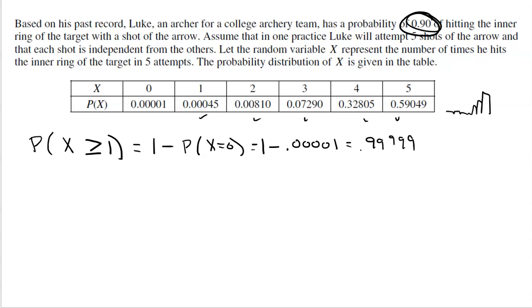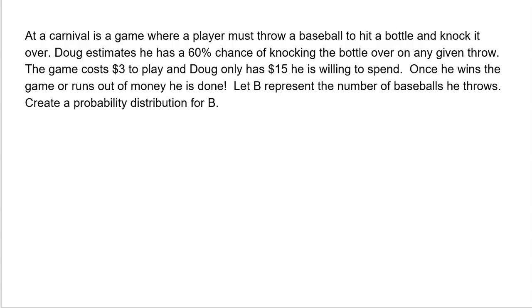But here's the cool thing. Sometimes a probability distribution where you are listing all of the options, all of the outcomes, and all the probabilities is not given to you. You have to build it. And these present kind of fun questions that you're going to have to tackle. Here's a really good one I came up with. At a carnival is a game where a player must throw a baseball to hit a bottle and knock it over. Doug estimates that he has a 60% chance of knocking the bottle over on any given throw. The game costs $3 to play, and Doug only has $15 to spend. Once he wins the game or runs out of money, he is done. Let B represent the number of baseballs he throws and create a probability distribution for B.